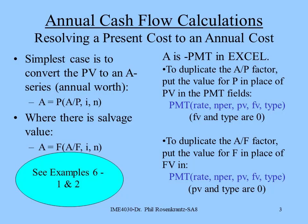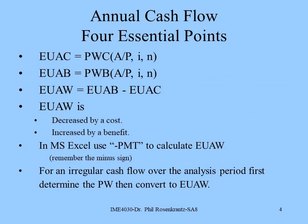If we have a salvage value — something that comes at the end of the project — to get the equivalent annual cost or benefit of that, we treat the salvage value as a future value and use the A/F factor. So whether we're given a present value or a future value at the end of the project, we can find the uniform series that's equivalent to those.